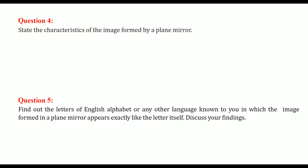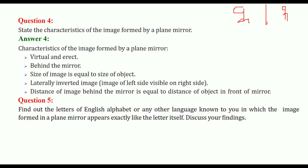State the characteristics of the image formed by a plane mirror. If you are standing in front of a plane mirror, the image formed is virtual and erect, and it is formed behind the mirror. The size of the image is exactly equal to the size of the object, and it is laterally inverted — your left hand side appears as the right hand side. The distance of the image behind the mirror is equal to the distance of the object in front of the mirror.